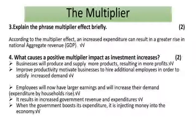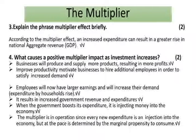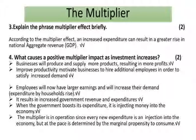When the government boosts its expenditure, it is injecting money into the economy. You can see that the multiplier is in operation since every new expenditure is an injection into the economy. However, the pace is determined by the marginal propensity to consume — the MPC. Thank you for watching.